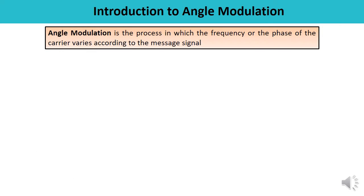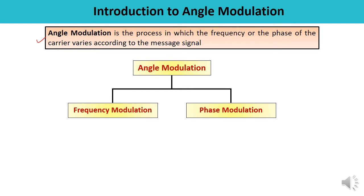Angle modulation is defined as the process in which the total phase angle of a carrier is varied according to the instantaneous value of the modulating signal or message signal. The amplitude of the carrier is kept constant. Angle modulation is of two types: frequency modulation and phase modulation.